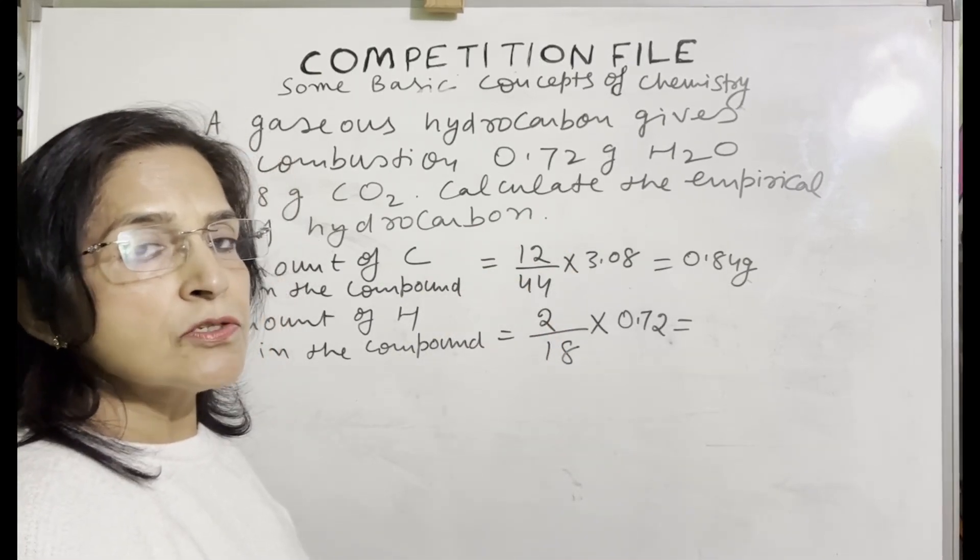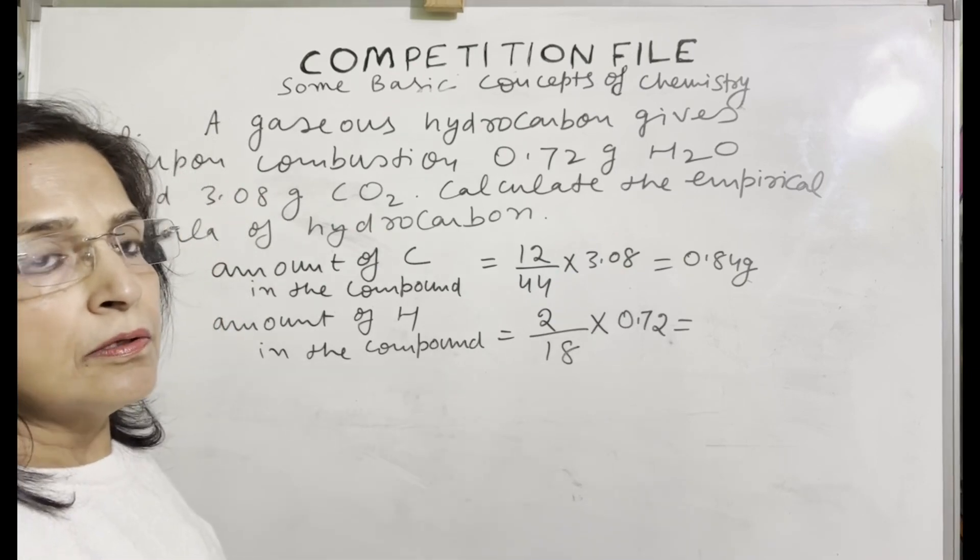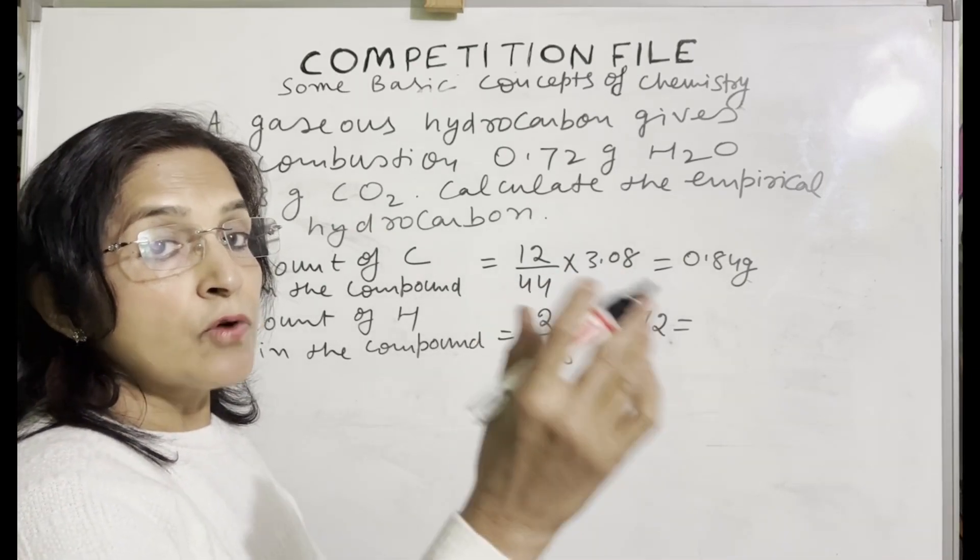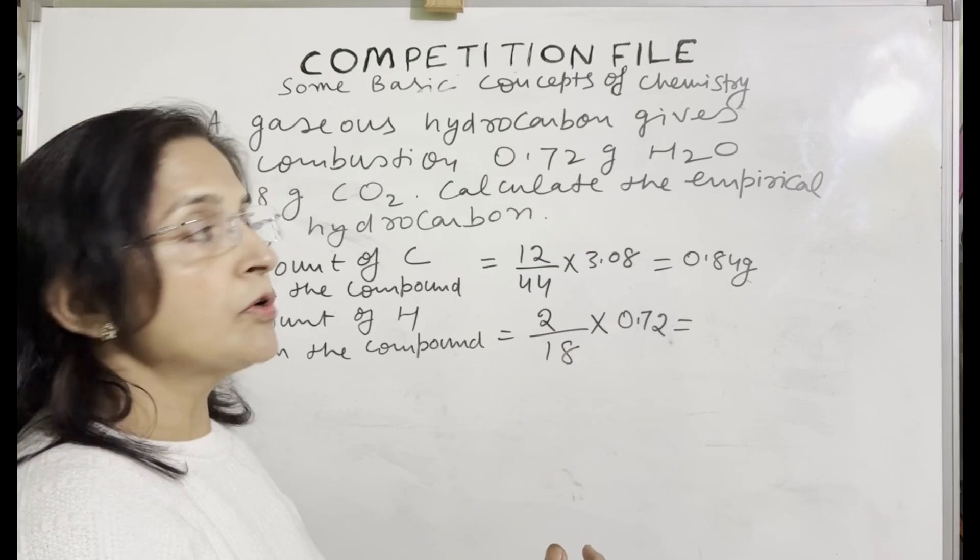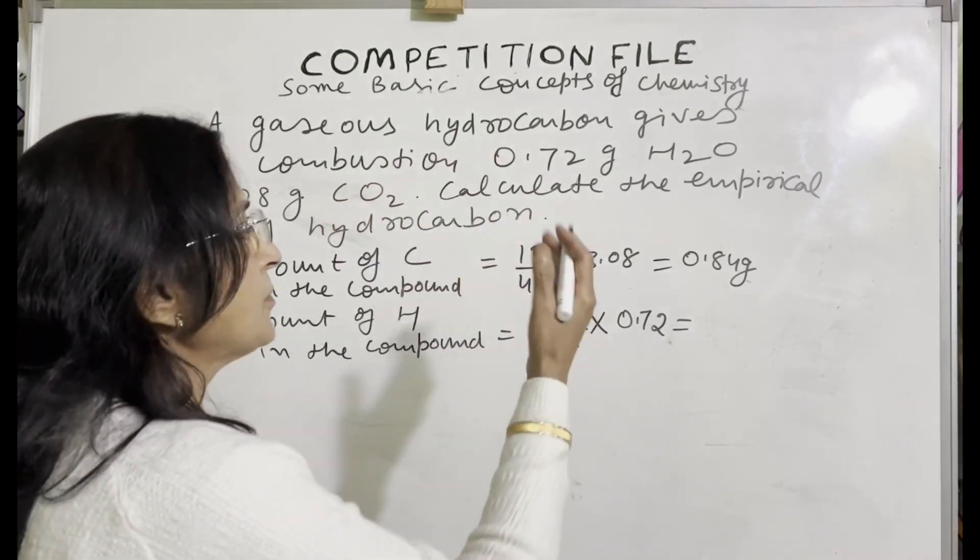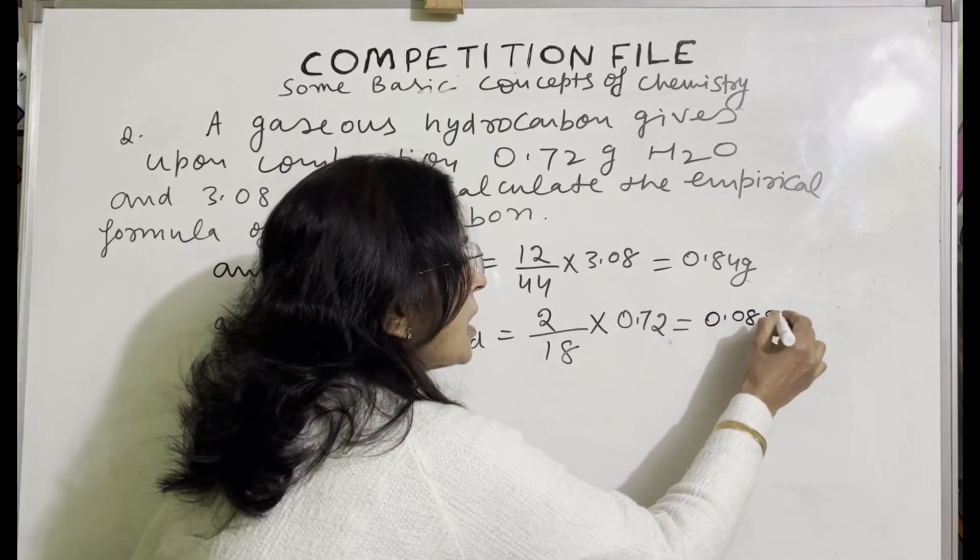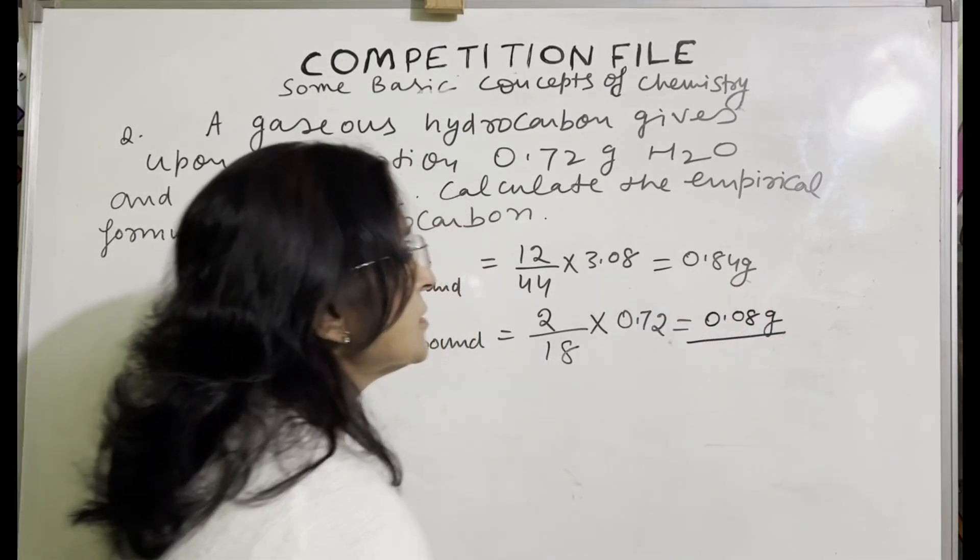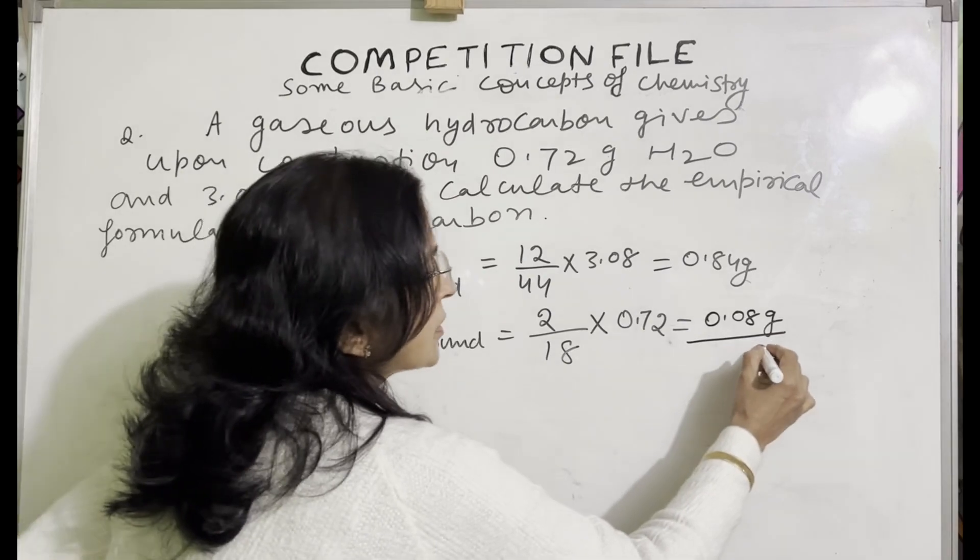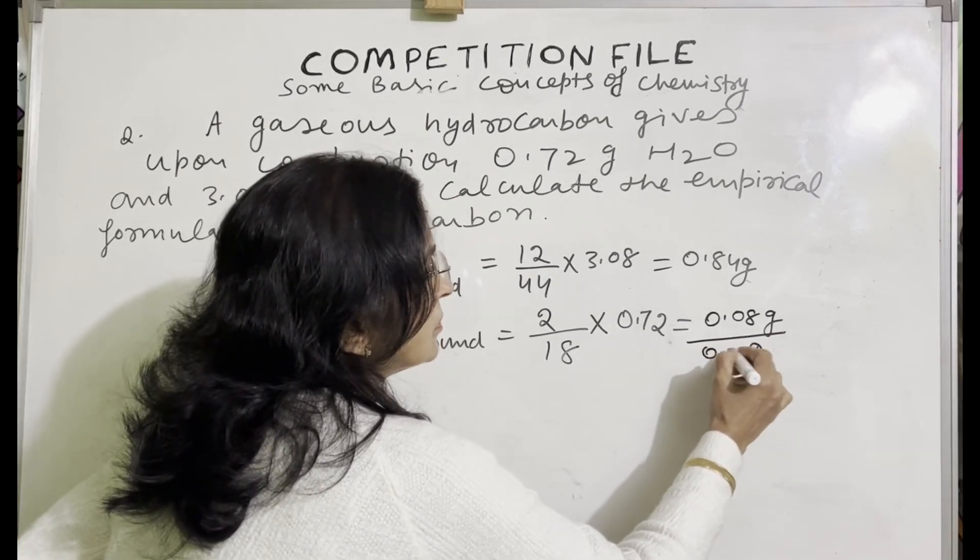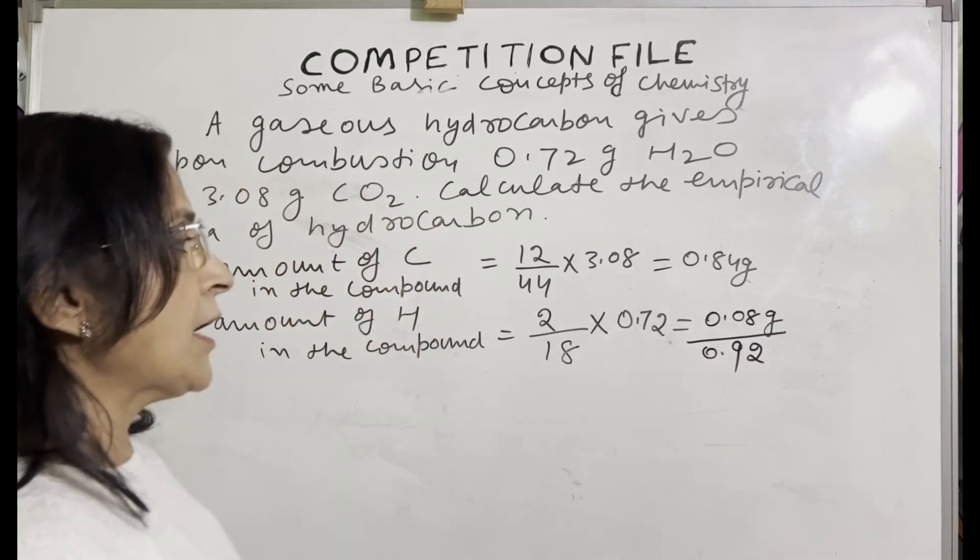Similarly, you will find for carbon. 44 is the molecular mass of carbon dioxide. In 44, how much carbon is there? 12. In 1, how much is there? 12 by 44. And in 3.08, how much is there? Now calculate this. Value comes 0.08 grams. Add both to get the mass of compound, which is 0.92 grams.